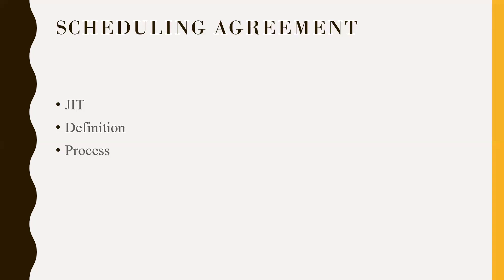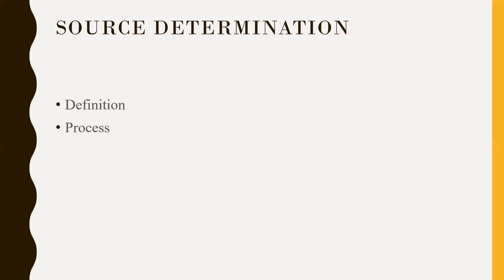Next question: What is source determination? Source determination means that a material can be supplied by more than one vendor, and assigning those vendors together with the material is called source determination. The master records involved are supplier master, material master, purchase info record, and source list — that clubbing of vendor with material is source determination.